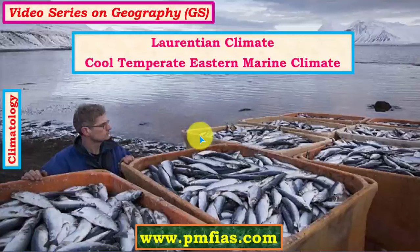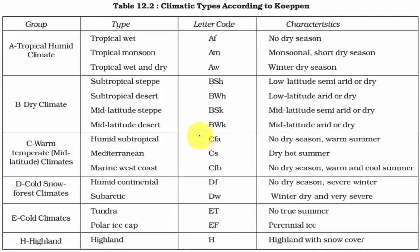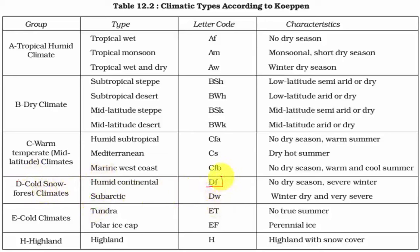In this video we study about the Laurentian climate, which is also called as cool temperate eastern marine climate or cool temperate eastern margin climate. This type of climate is included under cold snow forest climates under Koppen's scheme of climatic classification, represented by the capital letter D. There are two important types: the Laurentian type and the taiga type.